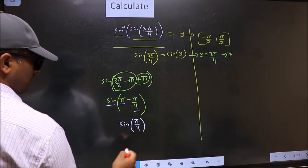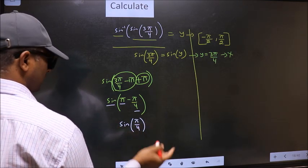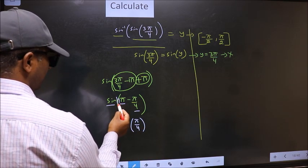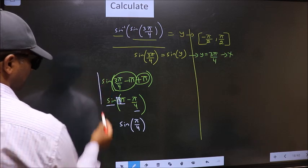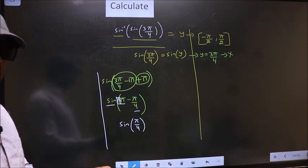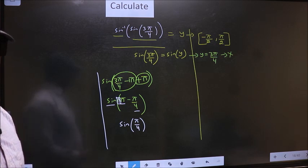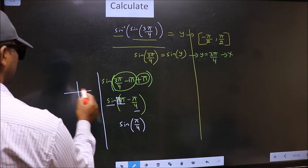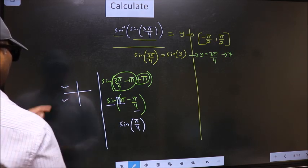Now the question is will we get here plus or minus. To answer that we should look at the number before π which is 1. And 1 is odd. And all the odd multiples of π, they lie either in the second or in the third quadrant.